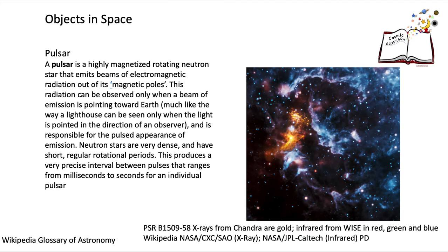A pulsar is a magnetised neutron star that is rotating and emitting beams of electromagnetic radiation. They are very dense and rotate really quite rapidly.